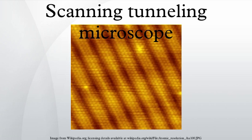Procedure: First, a voltage bias is applied and the tip is brought close to the sample by coarse sample-to-tip control, which is turned off when the tip and sample are sufficiently close.